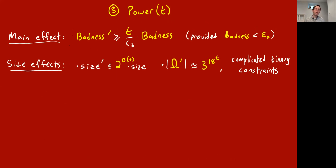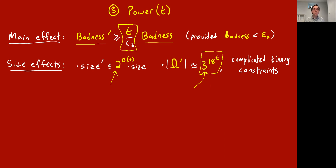There's only one step left: the key step, the powering step, which has this parameter t. This is the part that increases the badness in a three-coloring instance — it transforms to a different kind of CSP. The main effect of this powering step is to take a three-CSP with a certain amount of badness and increase its badness by a factor of t divided by some universal constant. The side effect is it will blow up the size by a constant to the order of t, giving a complicated CSP with a gigantic albeit constant-size label set and complicated binary constraints.